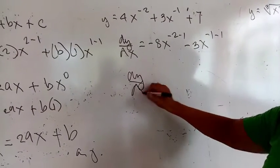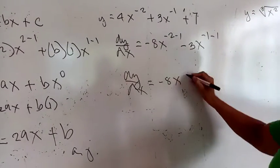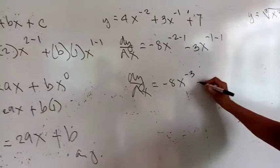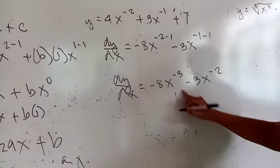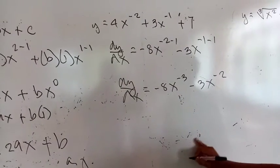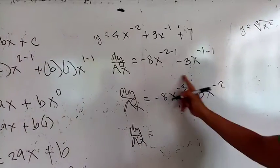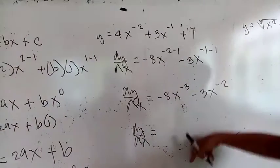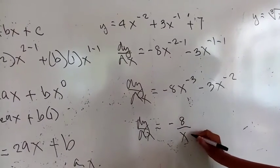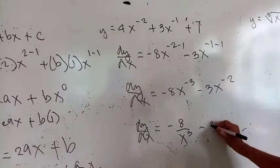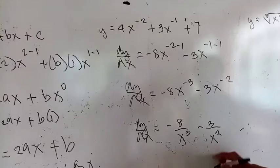For your total solution: that would be negative 8 times x to the power 1, which gives negative 8x. Then minus 3x to the power 2 minus 1, giving minus 3x. Using algebra, if we bring the negative exponents to the denominator to make them positive, that will give us negative 8 all over x to the positive 3, minus 3 all over x raised to the positive 2.